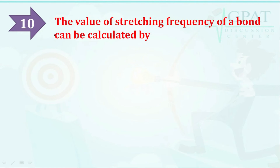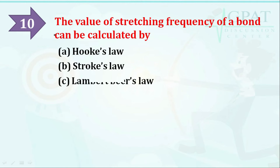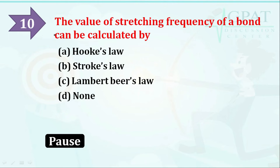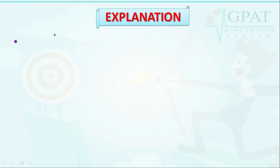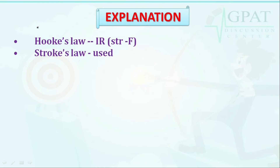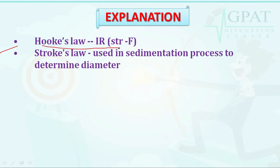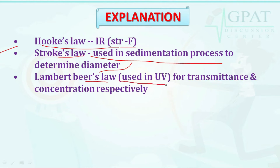The next question: the value of stretching frequency of a bond can be calculated by — option A: Hooke's Law, option B: Stokes' Law, option C: Lambert-Beer's Law, option D: none. The correct answer is Hooke's Law, which is used in IR spectroscopy for measuring stretching frequency. Stokes' Law is used in sedimentation to determine diameter, and Lambert-Beer's Law is used in UV spectroscopy for transmittance and concentration.